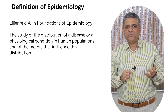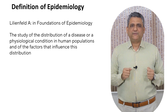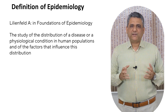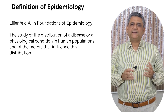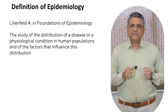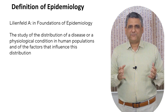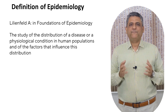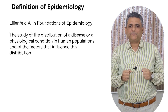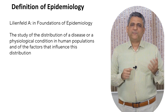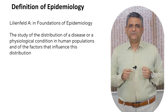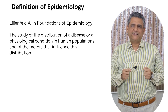Let's look at one of the early and classic definitions of epidemiology given by Lilienfeld in Foundations of Epidemiology. He defines it as the study of the distribution of a disease or a physiological condition in human populations and of the factors that influence this distribution. There are two key parts to this definition. First, the distribution — meaning who, where, and when the disease occurs. Epidemiology starts with patterns: age, gender, geography, and time trends.